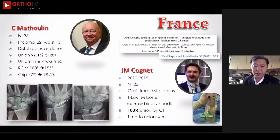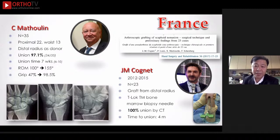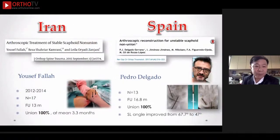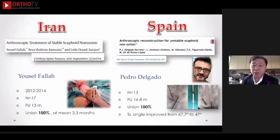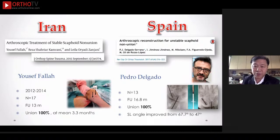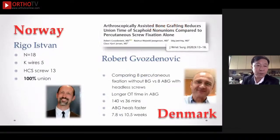Dr. Cognac in Paris also published in 2017, using a demineralized bone marrow-based technique taken from the distal radius as a very minimally invasive technique, achieving 100% union in all 23 cases. In Iran, Dr. Ferla also performed 70 cases with 100% union. In Spain, Dr. Patrick Ricardo performed 13 cases with 100% union, using an insulin syringe to inject the bone graft into the joint — a very good trick for this type of surgery. In Norway, a similar procedure was also performed with 100% union.